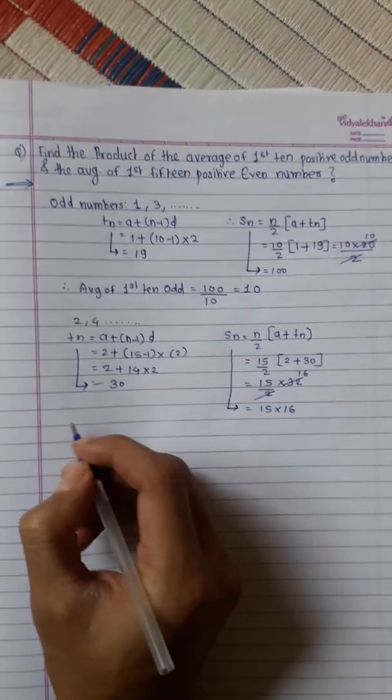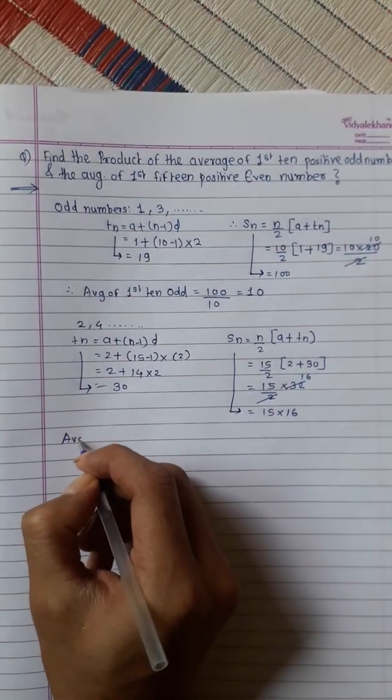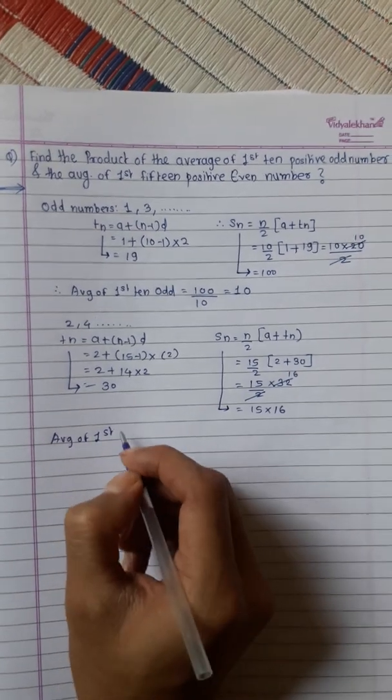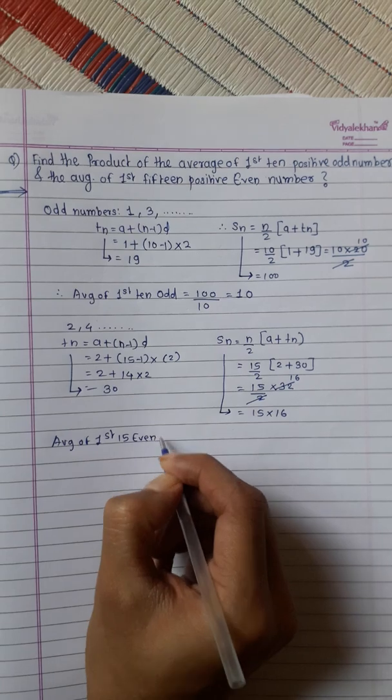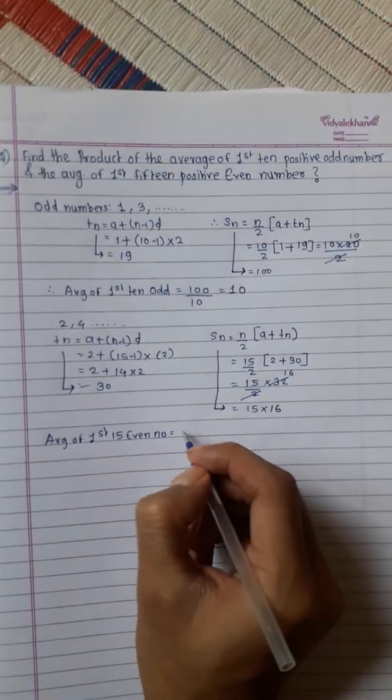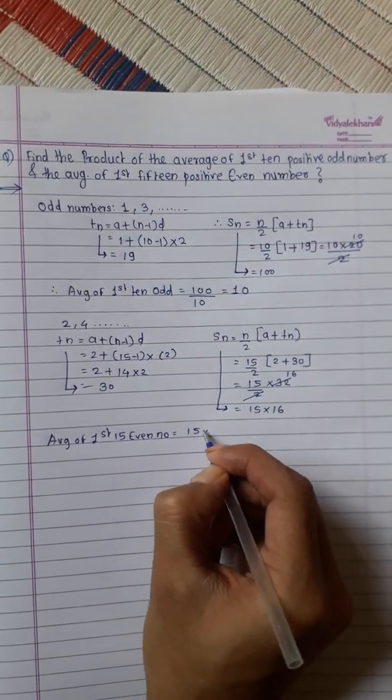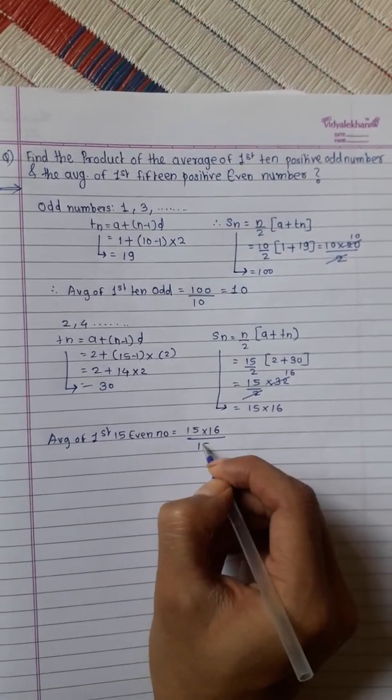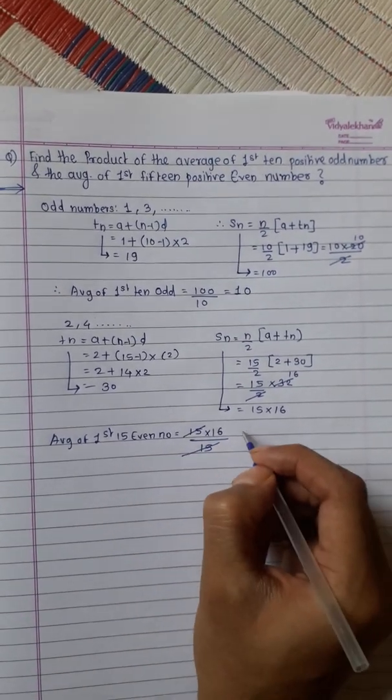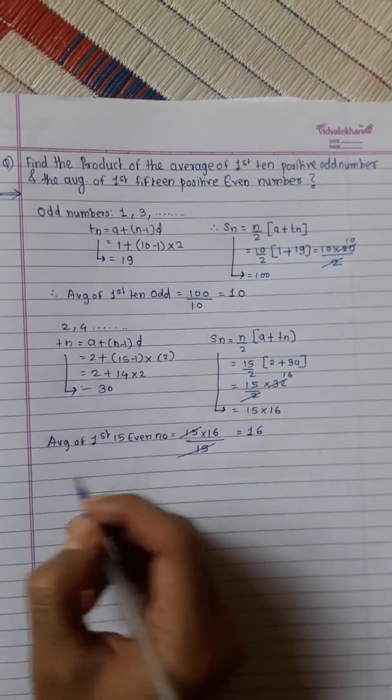Now, we will find the average of first 15 even numbers. Average equals sum. This is 15 into 16, divided by total numbers are 15. This 15, 15 get cancelled. This is 16.